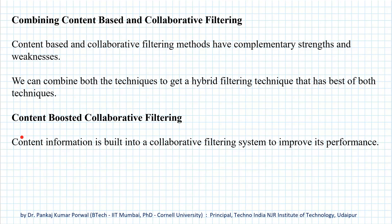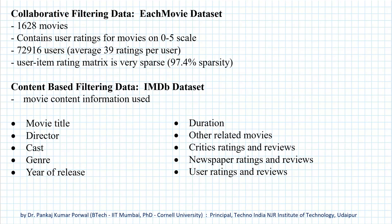In this approach, content information is built into a collaborative filtering system to improve its performance. So how do we do that? Let's understand this using an example. Let's say we want to recommend movies to users based on content-boosted collaborative filtering.